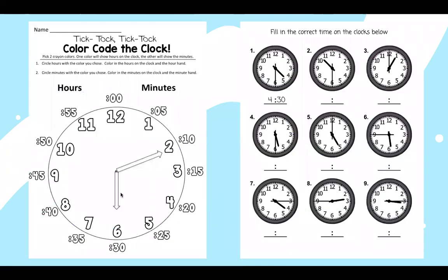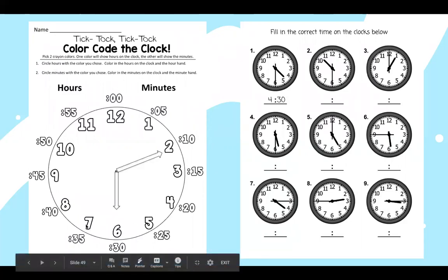Your activity that you have today is tick tock, tick tock color code the clock. You will pick two crayon colors. One color will show hours on the clock and the other will show the minutes. So circle hours with the colors you choose. So if I want to color all the hours red like I did on my clock, I will circle hours with a red crayon. And then I'm going to color the inside numbers of the clock. Those are our hours red.